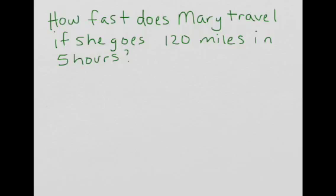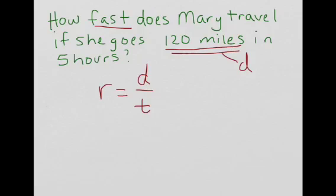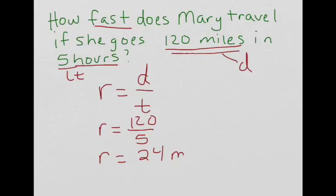Okay, let's look at the next one. How fast. Fast would mean that we're solving for rate. So we're going to do R equals D divided by T. Now we're going to be looking for a distance measurement. Here's the distance measurement, it's miles. This is our distance and again here's the hours and that's going to be our time. So we're going to do R equals 120 divided by 5. R equals 24 miles per hour. Remember your labels.